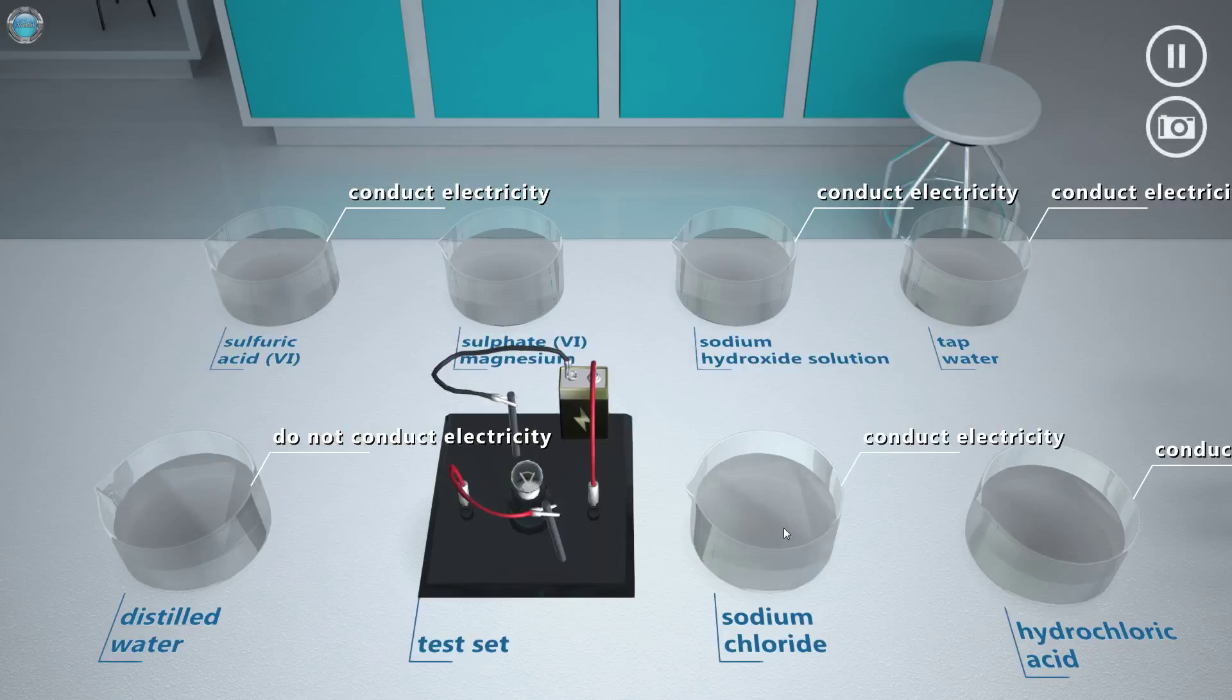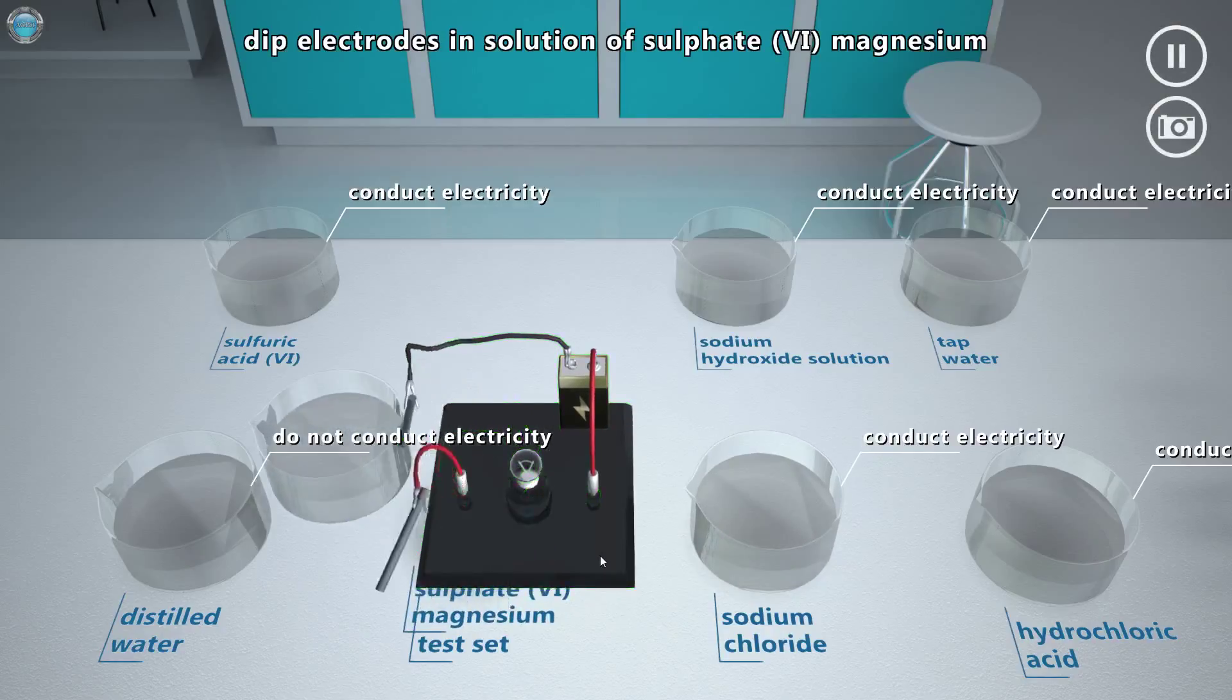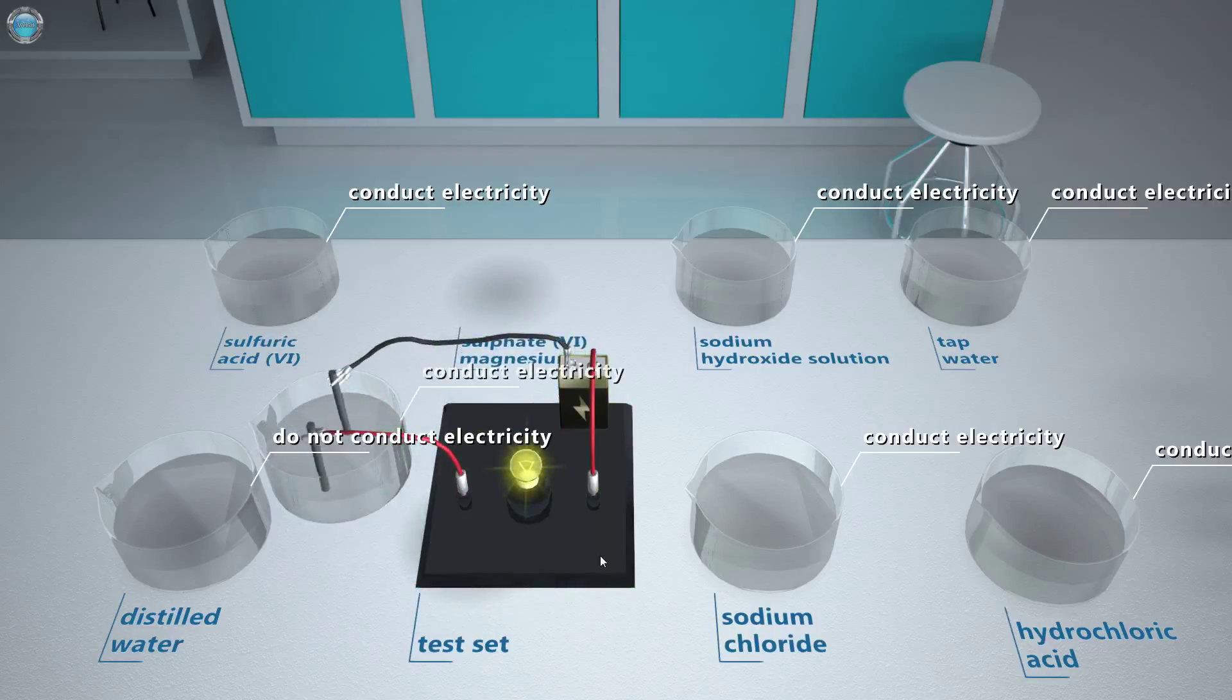Let's see if the same will happen with the solution of sulfate magnesium. That should be clear. Yep. Hydrated magnesium sulfate is commonly known as bitter salt or English salt. It was in fact mined in the United Kingdom, Epsom, and sold as a medicine with laxative properties. You might have noticed that after the graphite electrodes are immersed in salt solutions, we observe the illumination of the light bulbs in our test kit. Salts which dissolve in water conduct electricity as a result of the electrolytic dissociation they undergo.